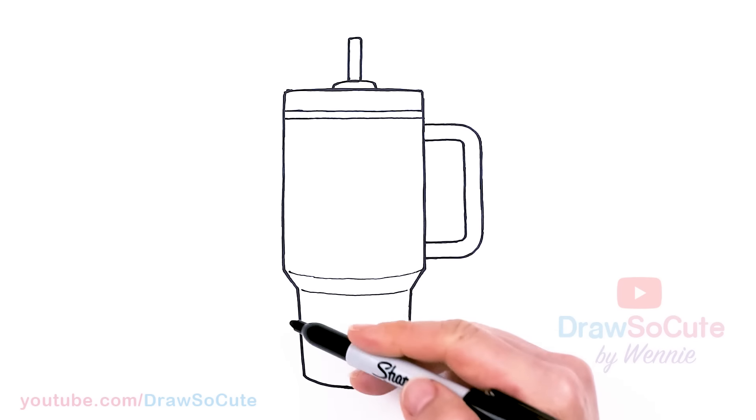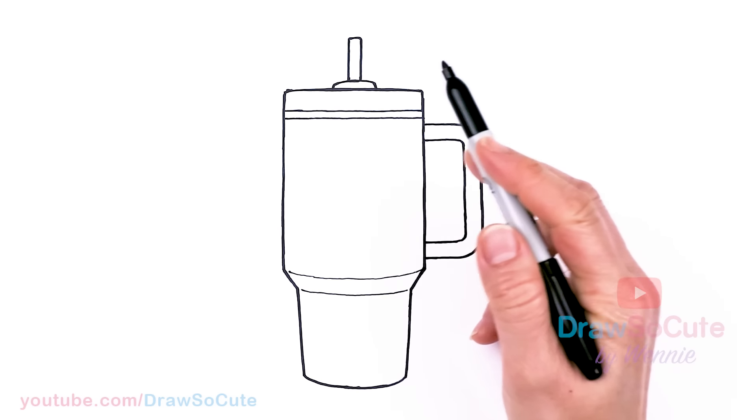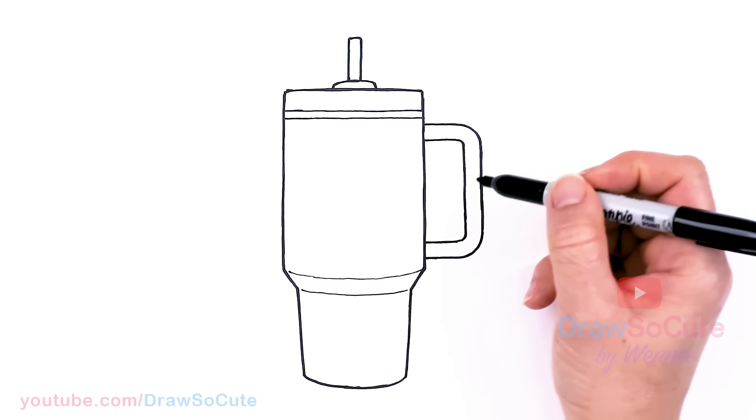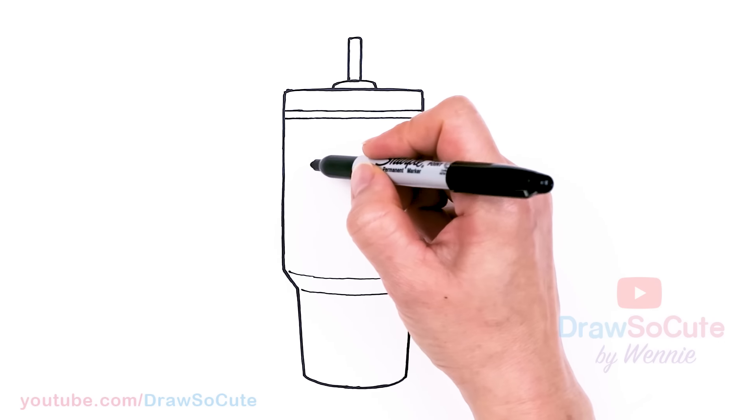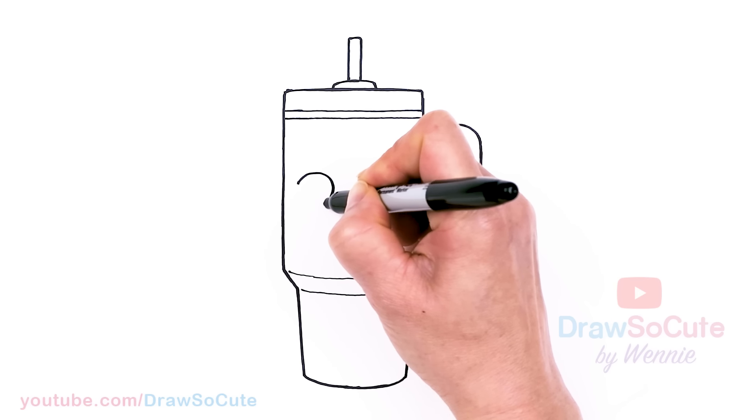And that is pretty much it for a Stanley Cup quencher tumbler. But to make it a Draw So Cute one, we need to add some eyes, right? To make it extra cute. So if you want to do that, let's come about right here. And I'm going to draw some Draw So Cute eyes.